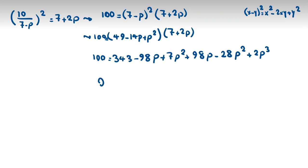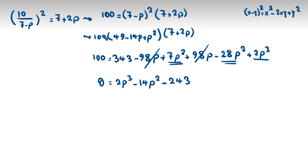Now if we take all things to one side: 0 equals 2p cubed minus 21p squared plus 243. The 98p terms cancel, negative 28p squared plus 7p squared gives negative 21p squared, and 343 minus 100 is 243.